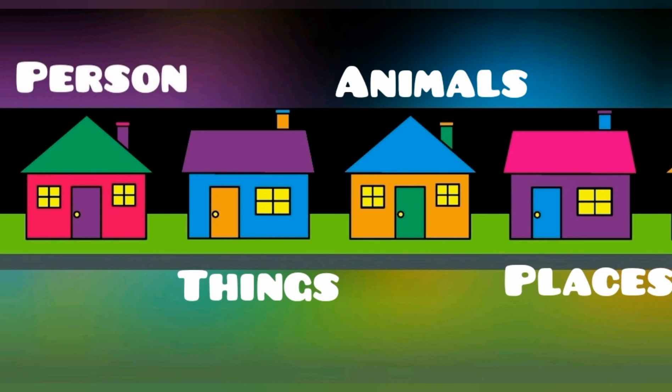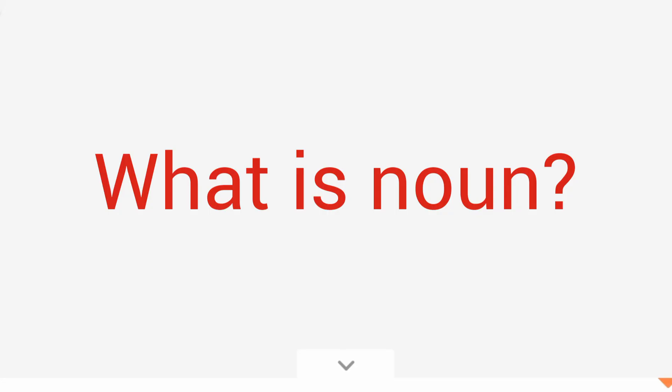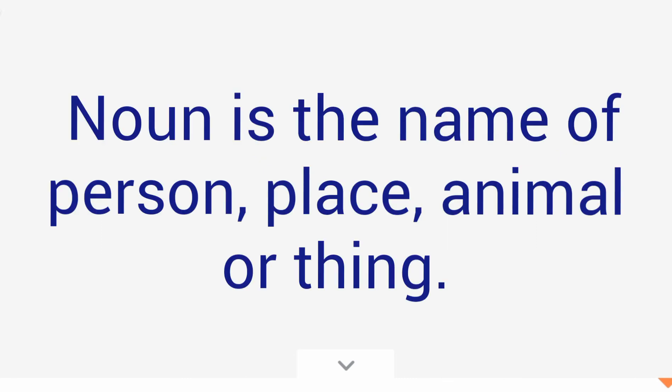So now let's get to know which noun has which houses. Noun has names of person, animals, things, or places. Let's repeat again. Person, animals, things and places. Now if someone asks you, what is noun? You have to reply: the names of person, animals, things and places is called noun.